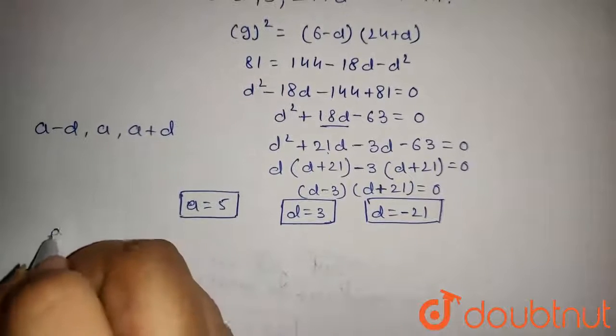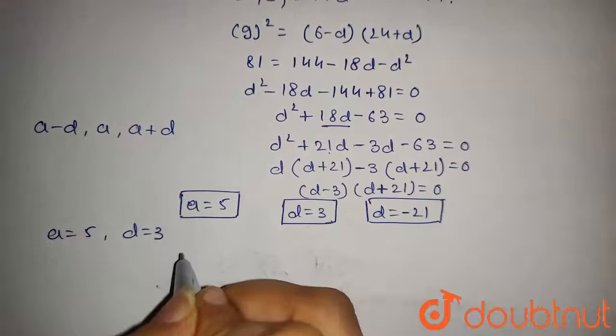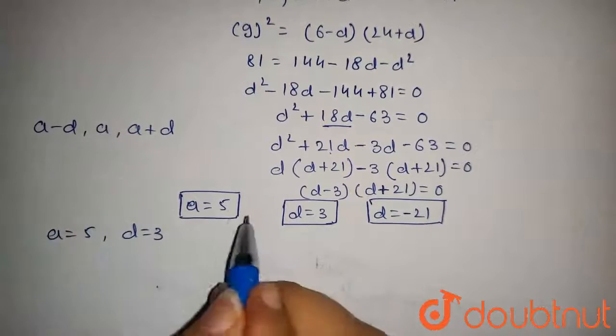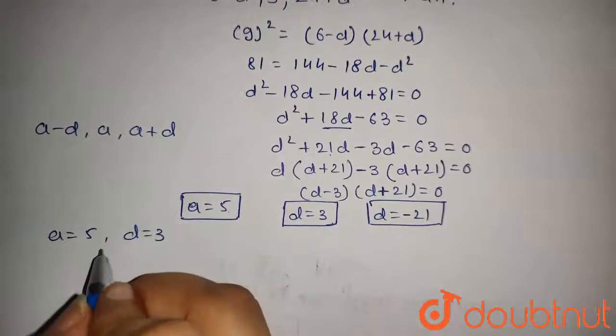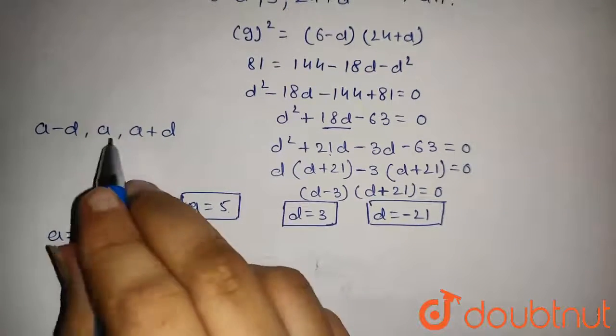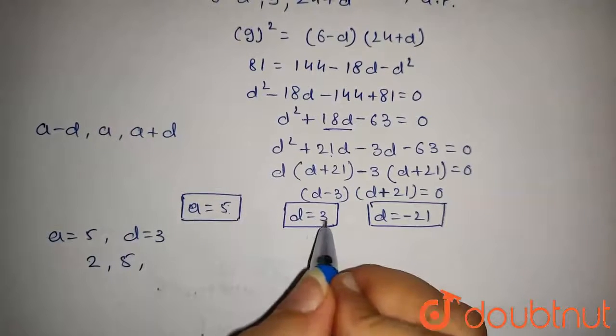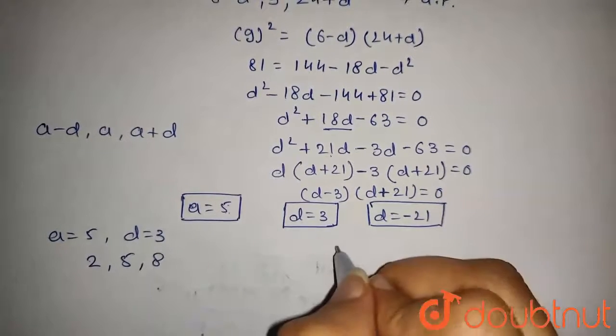When we put A equals 5 and D equals 3, these numbers will be: first will be 5 minus 3, that is 2. The second will be A, that is 5. The third will be A plus D, that is 5 plus 3, which is 8.